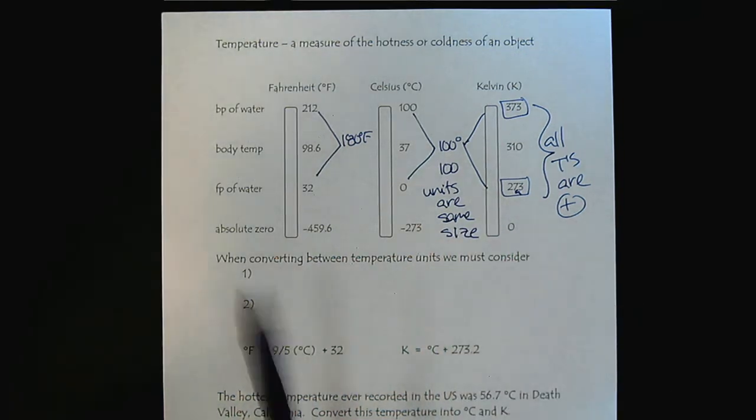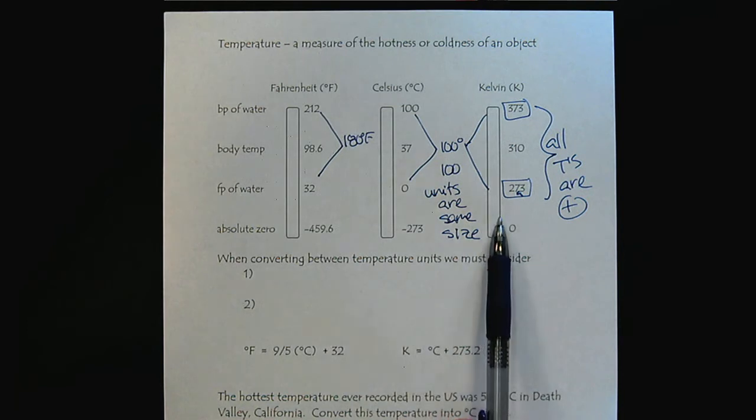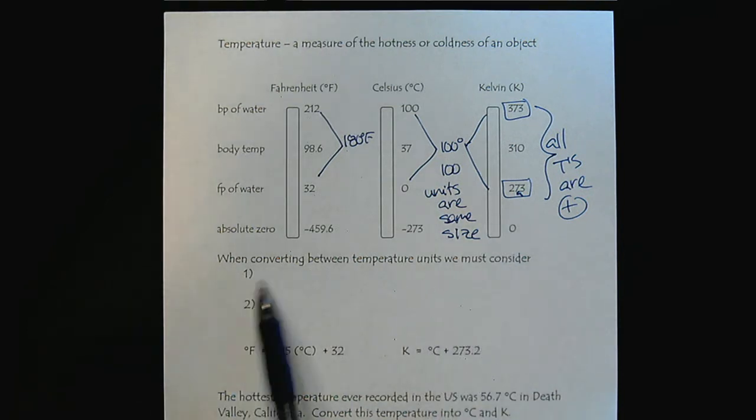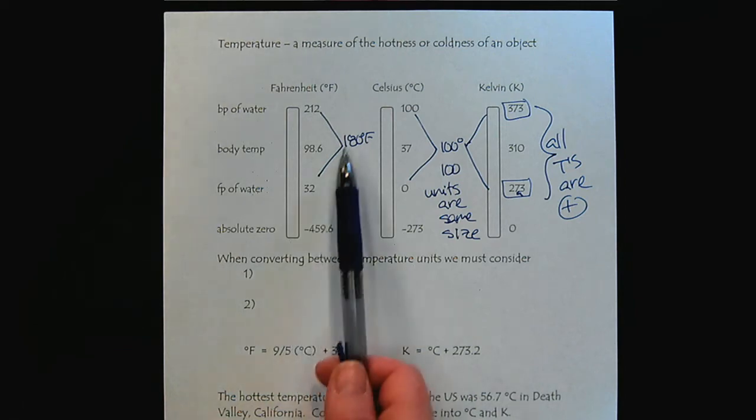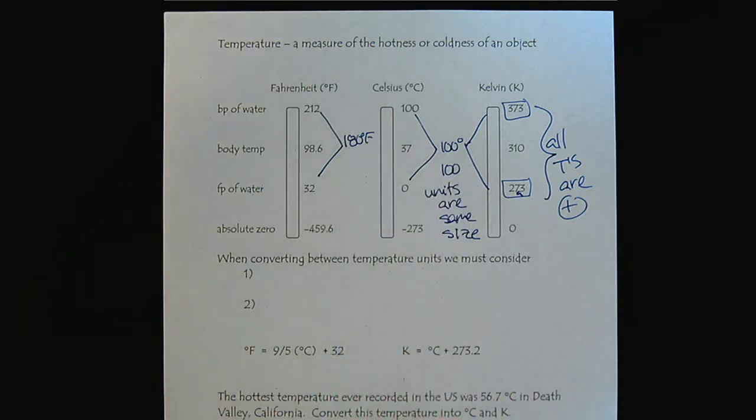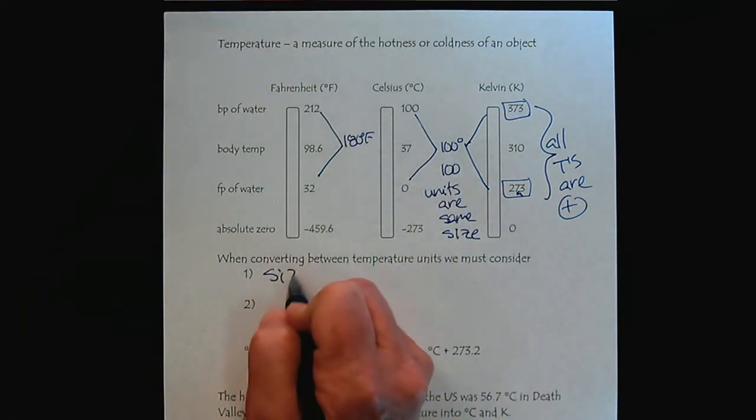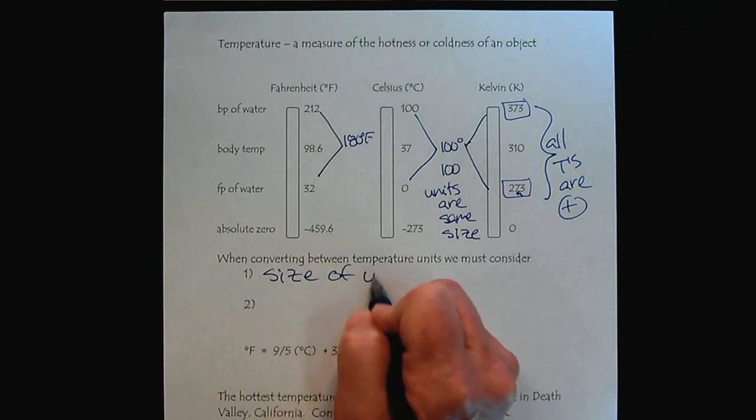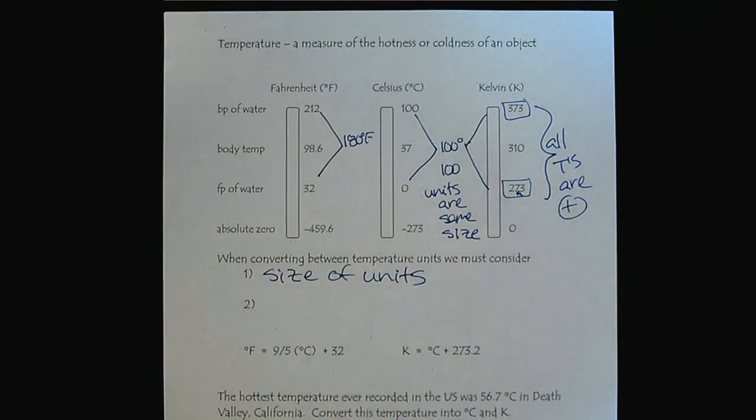In converting between Fahrenheit, Celsius, or Kelvin, there are two things that we have to consider. First, we need to consider the size of the units. We can see that between Fahrenheit and Celsius or Kelvin, the units are a different size, so our conversion has to allow for that difference.